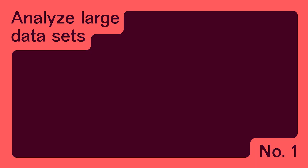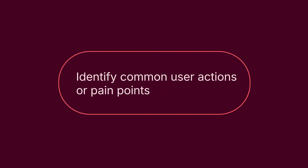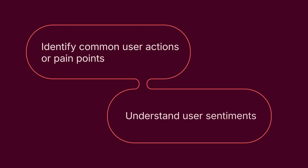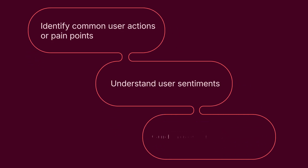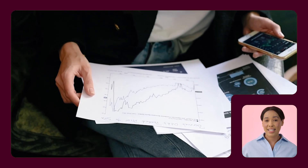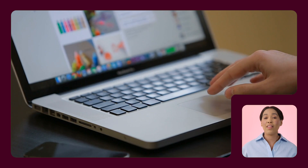Number one: use AI to analyze large volumes of user data. Survey responses, click-through rates, and usage statistics help you identify common user actions or pain points, understand user sentiments, and guide future design decisions. These insights help you understand how users currently perceive your product, service, or website based on their first-hand experience, allowing you to quickly validate hypotheses and create a more user-centric product.